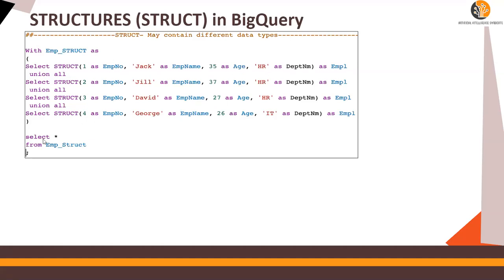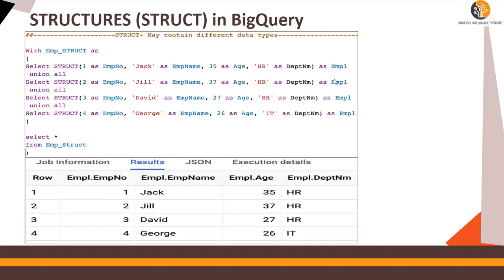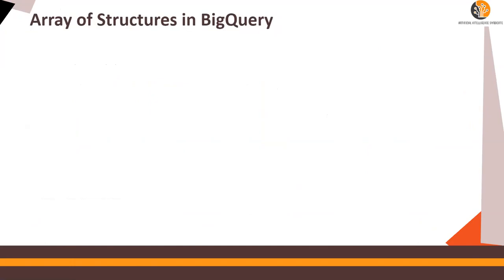When you run SELECT * FROM emp_struct, you would see EMPL, which is the structure, dot employee_number, EMPL dot employee_name, age, and department. You would see a prefix EMPL dot — EMPL in this case is the structure. Very simple. Now let's move on.